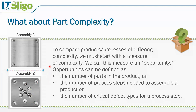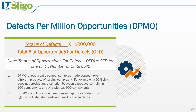The opportunities for defects is a key concept in Six Sigma. There are different definitions: the number of parts in the product, the number of process steps, or in some organizations, the number of critical defect types for a particular process step. The main thing is that it's consistent within your organization. The DPMO calculation is the total number of defects divided by the total number of opportunities for defects, multiplied by one million. The denominator is the opportunities per unit multiplied by the number of units built.